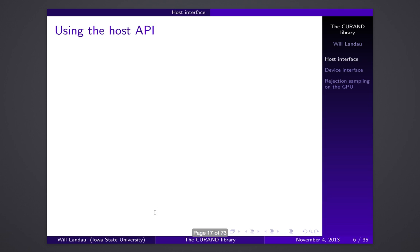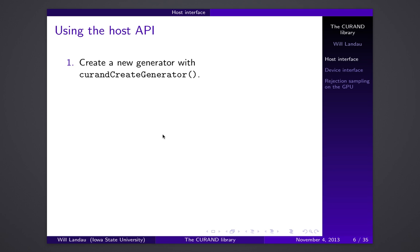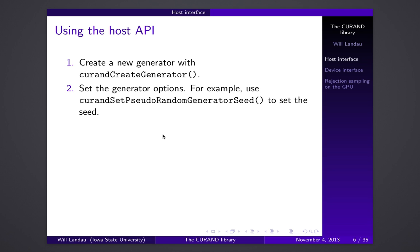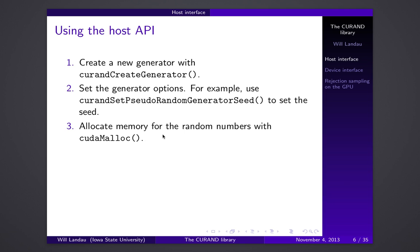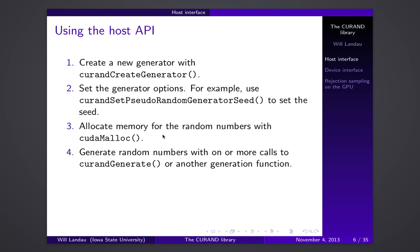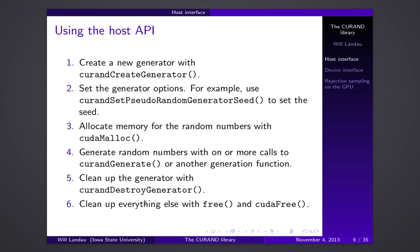For the host interface, here's the breakdown of the workflow. You create a generator, you set the generator seed — that tells the generator what starting point to use. You need to allocate memory yourself for the random numbers on both the host and the device. You call a function that uses the number generator to generate the values, then you clean up the generator with curandDestroyGenerator and free everything else with free and cudaFree.